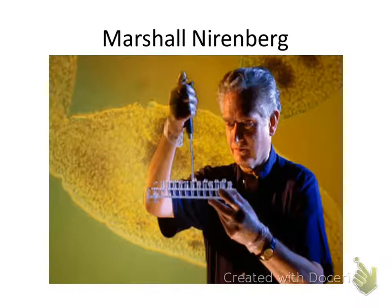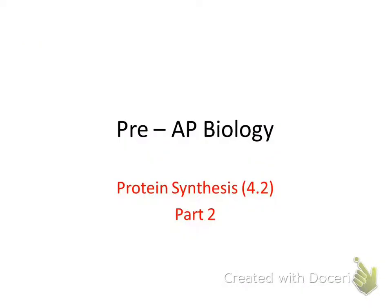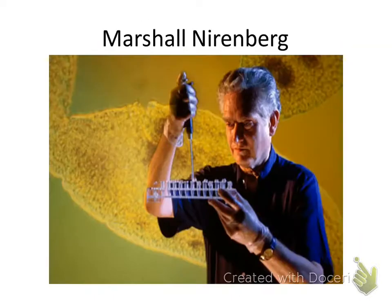Next we have translation — and that's where we're making a protein. Translation is the process of taking from one language and changing it into a different language. Transcription was just rewriting; translation is changing it into a different language. In the process, you're going from nucleotide or DNA language into amino acids. Amino acids are what builds proteins. The process occurs at the ribosome.